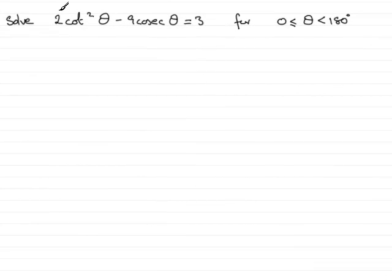In this question we're asked to solve 2 cot squared theta minus 9 cosec theta equals 3 for theta between 0 and 180 degrees.